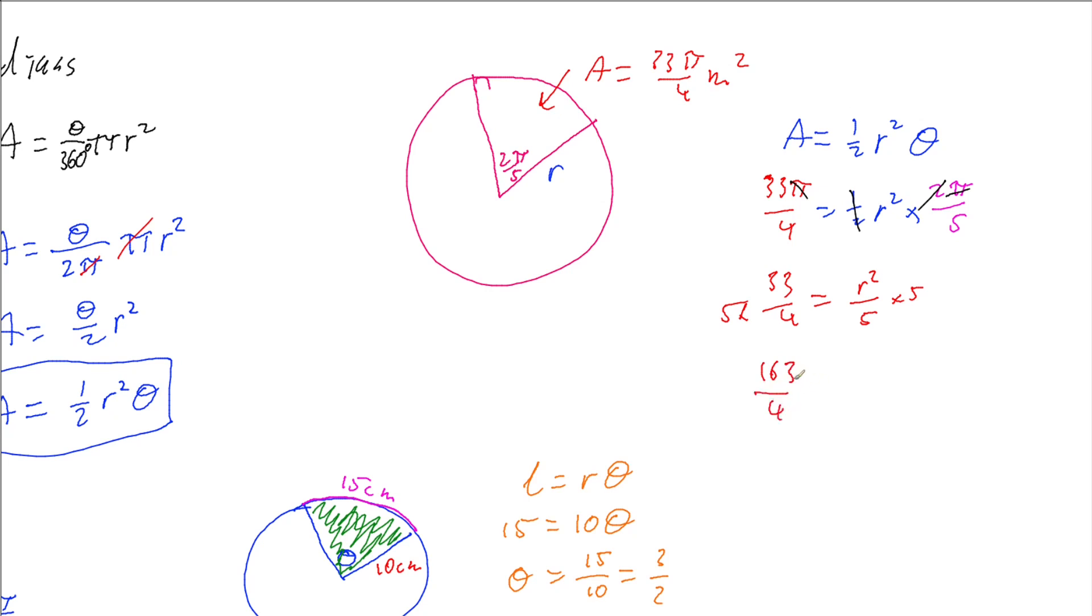So I've got 165 over 4 equals our radius squared. And square rooting that we'll get a radius of 6.42 meters. And there we are done.